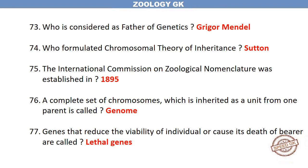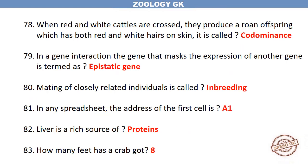A complete set of chromosomes which is inherited as a unit from one parent is called a genome. Genes that reduce the viability of an individual or cause the death of the bearer are called lethal genes. When red and white cattle are crossed, they produce a roan offspring which has both red and white hairs on skin — this is called codominance.